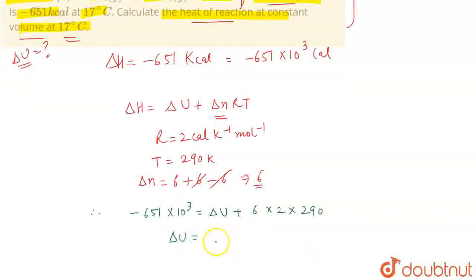This equals delta U plus delta N. Delta N is 6. The delta U value will come out to be minus 654.48 kilocalorie. This is the correct answer. So that's all for the question.